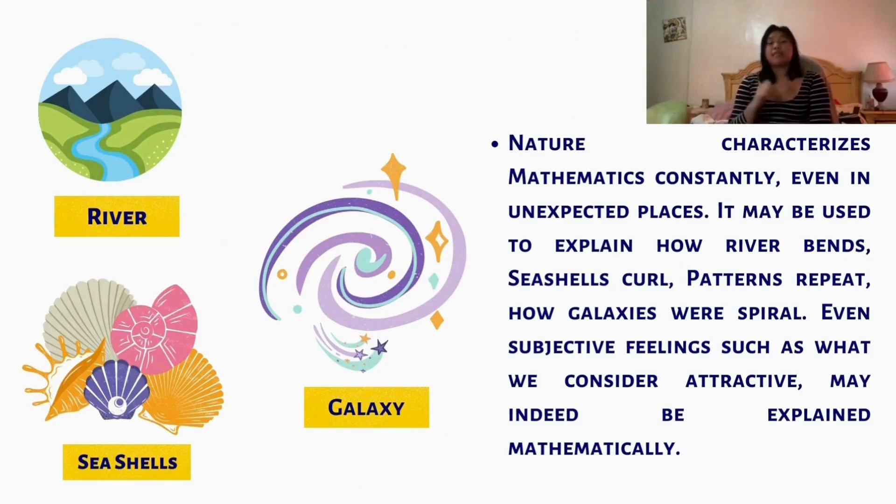Nature characterizes mathematics constantly even in unexpected places. It may be used to explain how rivers stand, seashells grow, patterns repeat. Honestly, ask yourself how galaxies would spiral, even subjective feelings such as what you consider attractive may be needed to explain mathematically.